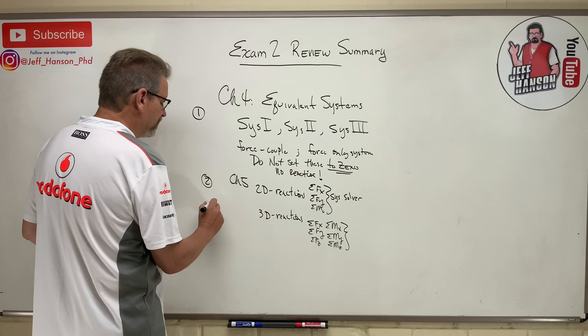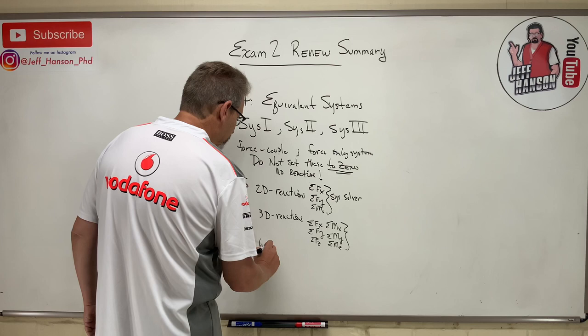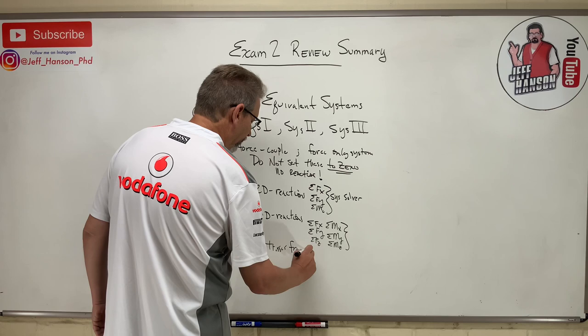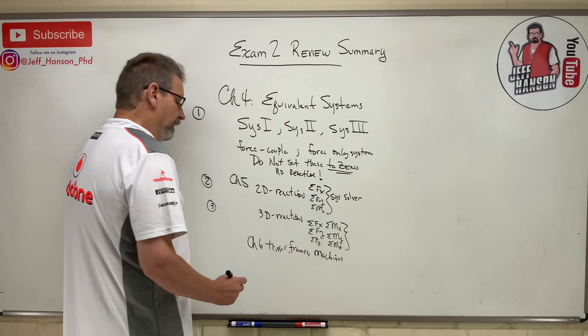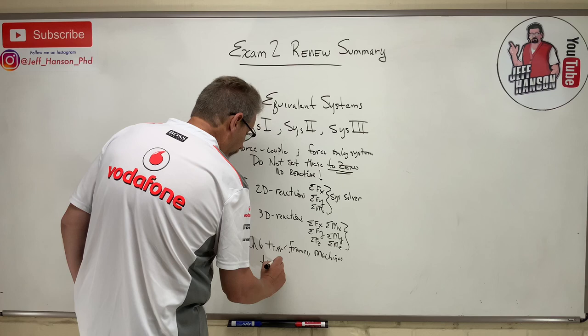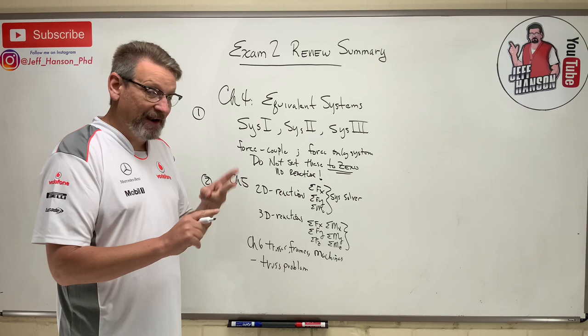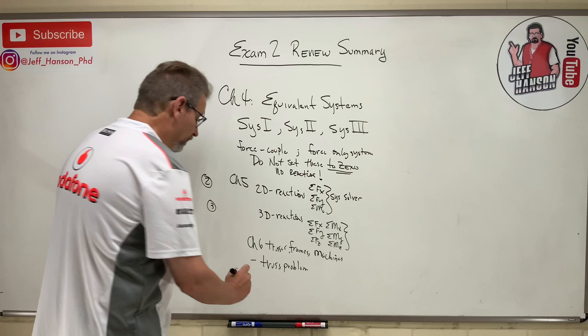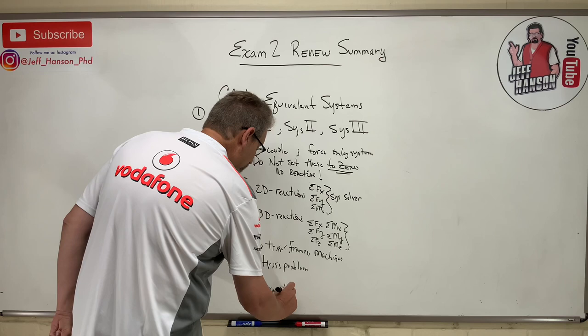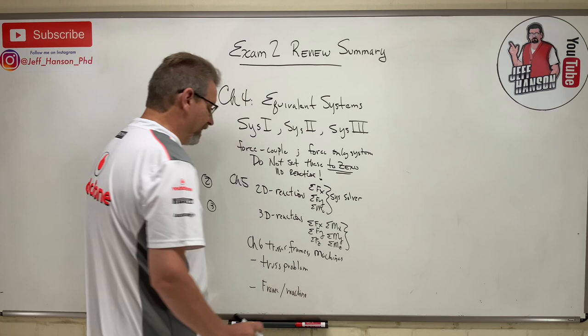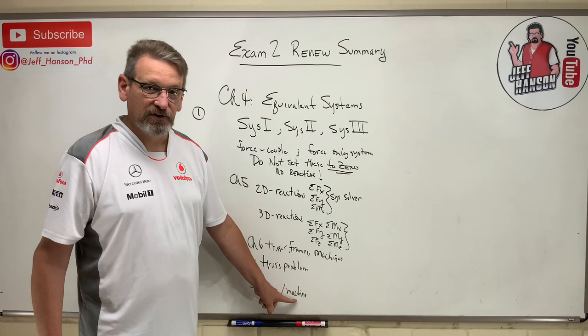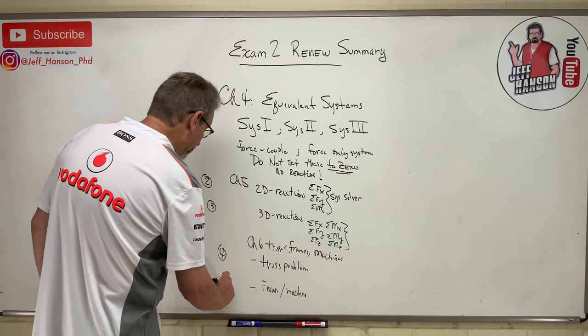That covers questions two and three. Then finally Chapter 6: trusses, frames, and machines. You're definitely going to get a truss problem — one of those combo problems where you use a little method of sections and a little method of joints to solve it. And then of course something like a frame or machine problem. Those two are virtually exactly the same except frames have global equilibrium and machines really don't. So that's problem four and problem five.